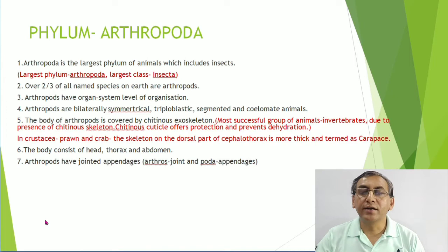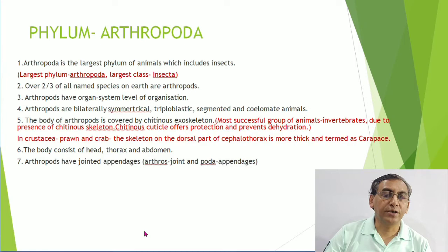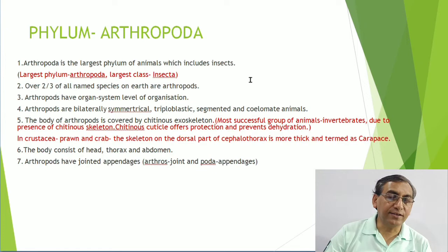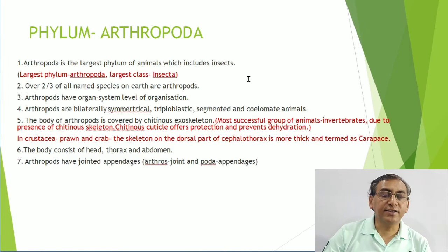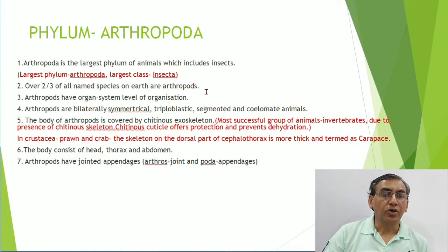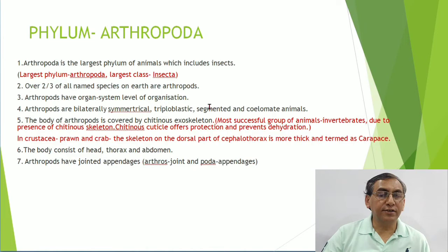Now we discuss phylum Arthropoda. Arthropoda is the largest phylum of animals, which includes insects. The largest class is Insecta. The second largest phylum is Mollusca, and the second largest class is Gastropoda. Over two-thirds of all named species on Earth are arthropods. Arthropods have organ system level of organization.